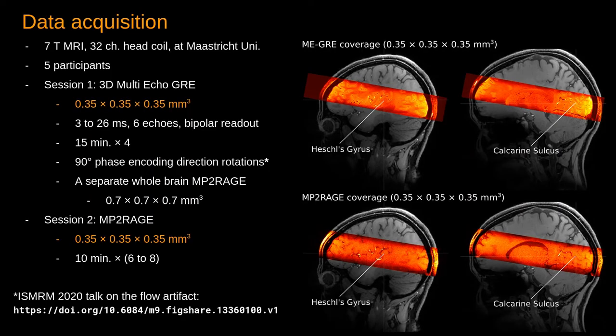In this study, we have acquired MRI data at 7T using the scanner at Maastricht University. We have acquired data from five participants and our experiment consisted of two sessions. In the first session, we have acquired very high resolution multi-echo gradient recalled echo images.